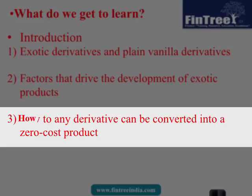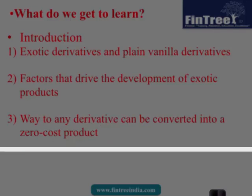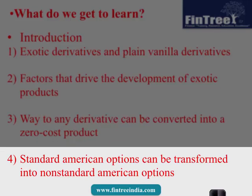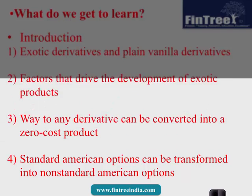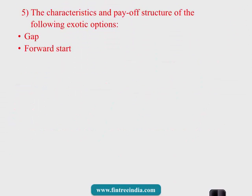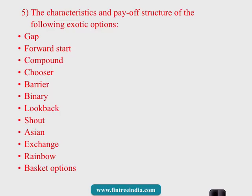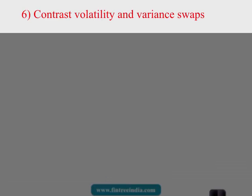We'll cover how any derivative can be converted into a zero-cost product, and how standard American options can be transformed into non-standard American options. The main learning outcome is looking at all the exotic options — you'll need to remember the exact characteristics of each option and may be required to do certain calculations. We'll do one example of each. The last learning outcome compares volatility versus various stops.